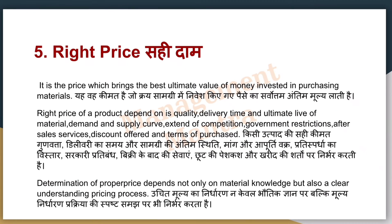Next आता है right price। Price आपको best ultimate value for money बताता है — जो भी material आप purchase कर रहे हैं, उसके लिए आप कितनी value दे रहे हैं, वो होता है price। Right price depend करता है product की quality पर, delivery का time, material कैसा है, उसकी demand और supply का curve, competition कितना है, government की restrictions, after sale services, discount, और offer और terms। आप determine करते हैं कि proper price क्या है — जो सिर्फ material की knowledge पर नहीं, बल्कि pricing की पूरी process को समझकर तय होता है, और आपको कहाँ benefit मिल रहा है।